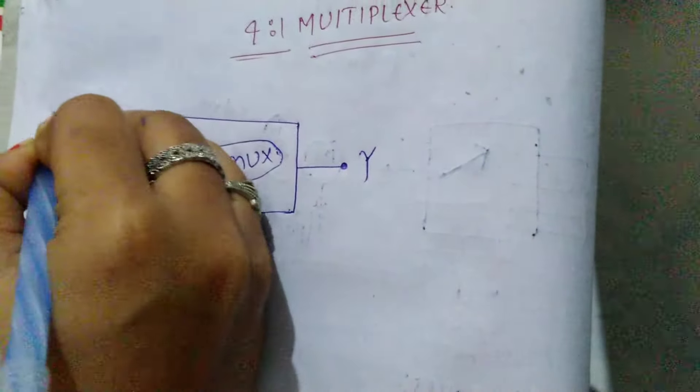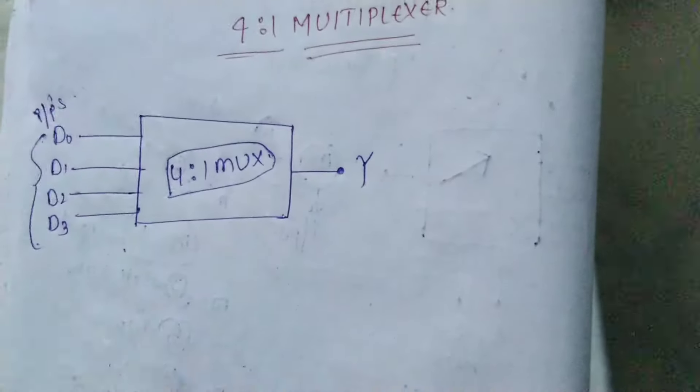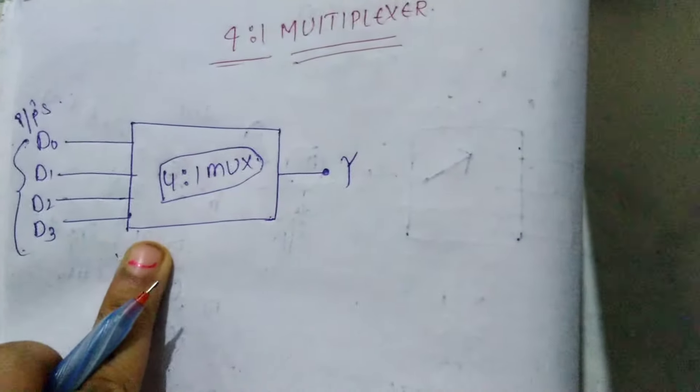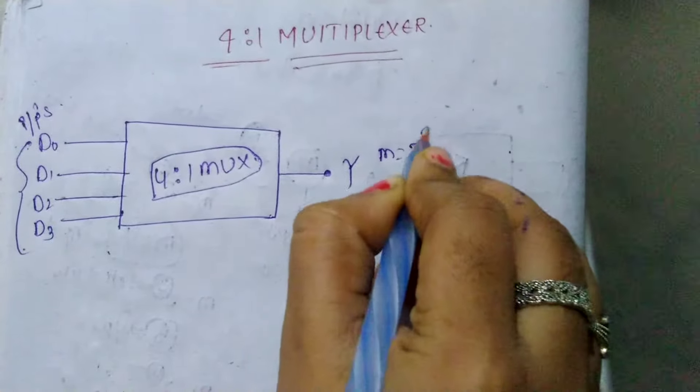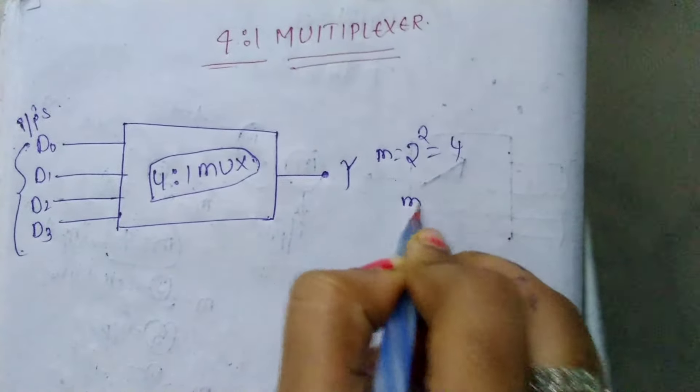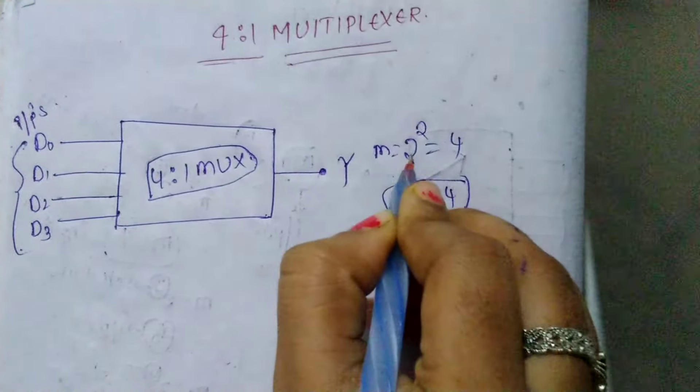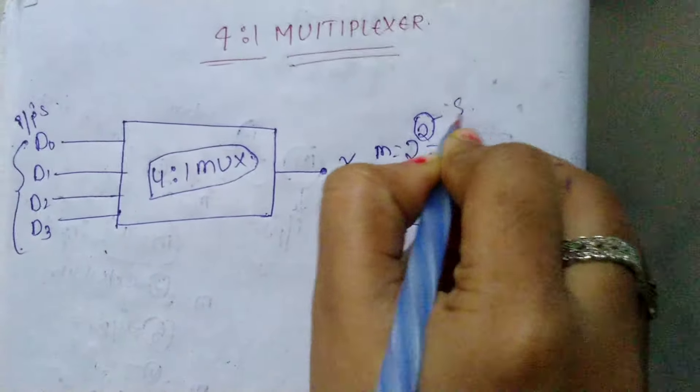So we have D0, D1, D2, D3 and output Y as inputs. When we have 4 inputs, how many select lines do we need? m is equal to 2 power n, so 4 equals 2 power 2. We need 2 select lines.